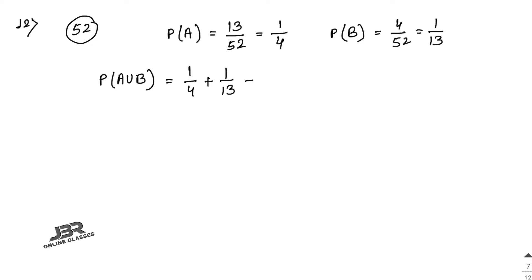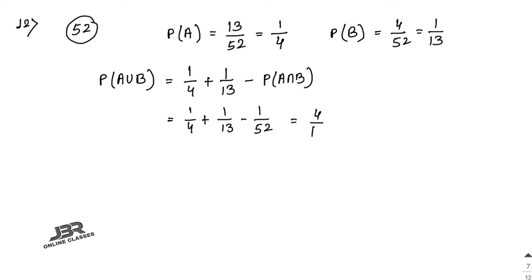So P(A intersection B) = 1/52. Therefore P(A union B) = 1/4 + 1/13 − 1/52, and the final answer is 4/13.